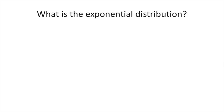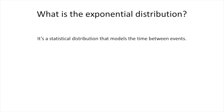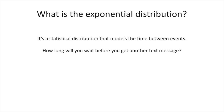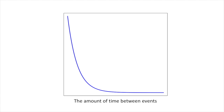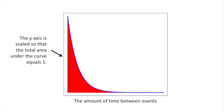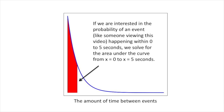What is the exponential distribution? It's a statistical distribution that models the time between events. For example, how long will you wait before you get another text message? Or, how much time will pass before the next person views this video? Here's what an exponential distribution looks like. The x-axis is the amount of time between events. The y-axis is scaled so that the total area under the curve equals 1. If we are interested in the probability of an event, like someone viewing this video, happening within 0 to 5 seconds, we solve for the area under the curve from x equals 0 to x equals 5 seconds.